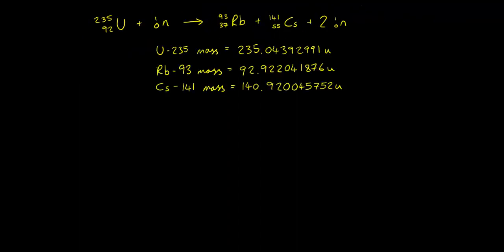For example, determine the energy released in this fission reaction. We have uranium-235 being combined with a neutron to produce the daughter nuclei rubidium-93, cesium-141 and two spare neutrons. We've been provided with the masses of uranium-235, rubidium-93 and cesium-141 in atomic mass units. First of all, we need to calculate the mass before the reaction.